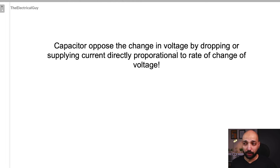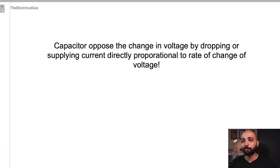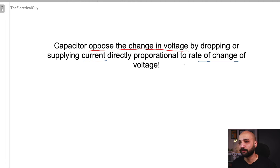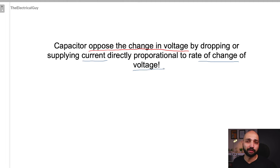The capacitor opposes the change in voltage by dropping or supplying current, which is directly proportional to the rate of change of voltage. The capacitor is simply opposing the change in voltage by dropping or supplying current. And the current is directly proportional to the rate of change of voltage — when the rate of change of voltage is higher, the current supplied or dropped by the capacitor will also be higher, and the opposite is also true.